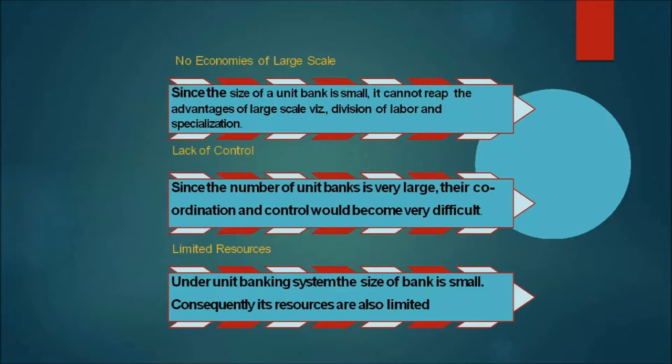Since the number of unit banks is very large, their coordination and control becomes very difficult. Another disadvantage is the risk of bank failure — unit banks are more exposed to closure risk. Bigger units can compensate losses at some branches against profits at others, but this is not possible for smaller banks, and hence they have to face closure sooner or later.